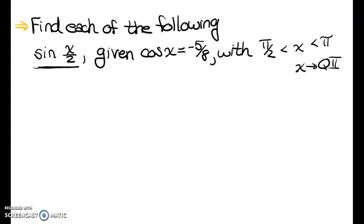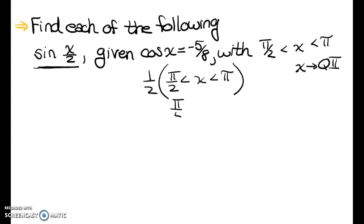How do I find out where x over 2 is? I can take where x is — we've done this before. I need to find where x over 2 is, so I'm going to multiply everything in the inequality by one half to get pi over 4 is less than x over 2 is less than pi over 2. So x over 2 is in quadrant 1.